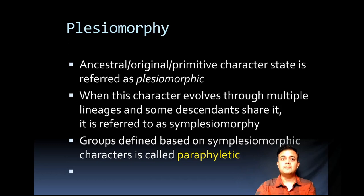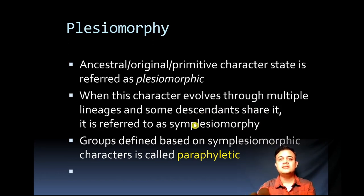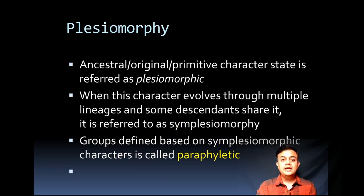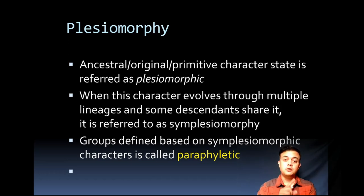Plesiomorphic refers to an ancestral, original, or primitive character state — the plesiomorphic character state. When this character is shared among multiple lineages but only some descendants share it, not all descendants, it is called symplesiomorphic. Groups defined based on symplesiomorphic characters are known as paraphyletic groups.